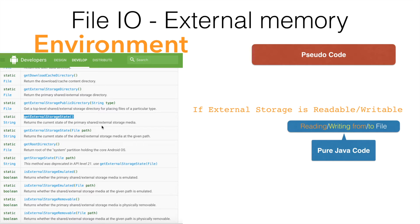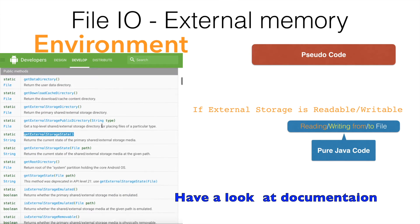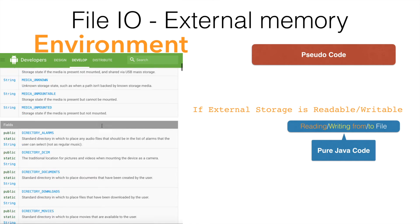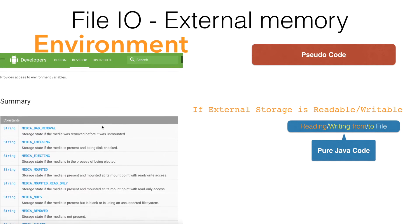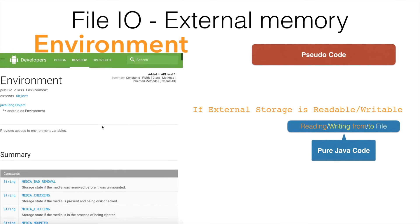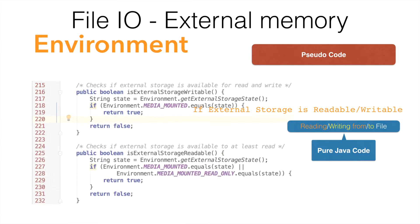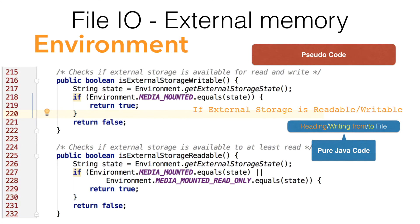So to check whether you have readable and writable external storage, I will be using two utility methods: isExternalStorageWritable and isExternalStorageReadable.